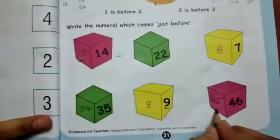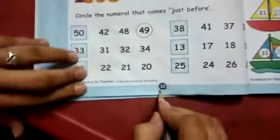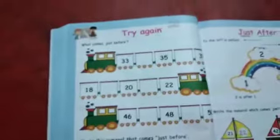Before number kis ko bolta hai? Jo number diya hai, uske pehle ka jo number hai, usko bolta hai before number. Okay, and next page aapko 32 number ka page hua. Aapko homework mein karna hai. Okay, bye bye kids.